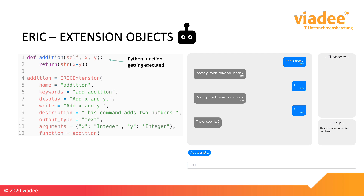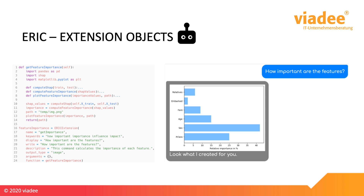First you define a Python function that performs the addition of the two numbers, and then you create an ERIC extension object which gets a couple of parameters. For example, you can determine what message is written into the chat window, or what arguments the function requests from the user. When starting the ERIC program, the system automatically scans through this object and generates the rules that guide the dialogue. Of course you can also have more complex functionality — for example, here we implemented feature importance for the machine learning model, so that you can ask ERIC how important the features of the model are. It also accesses the training data and the machine learning model within the Python code, meaning you always have full access to things like that from your code.